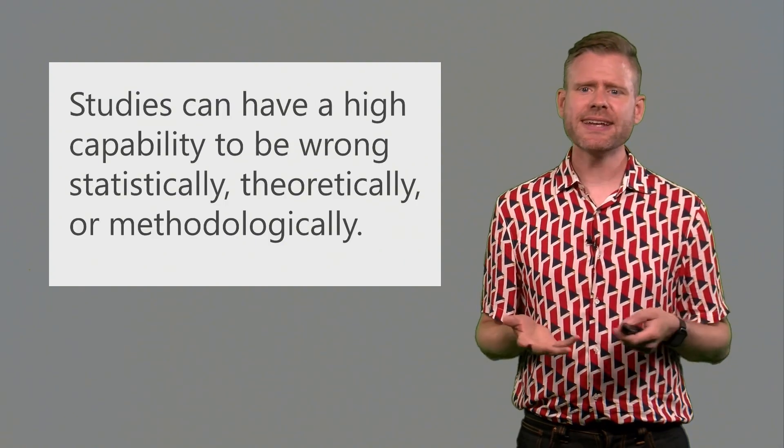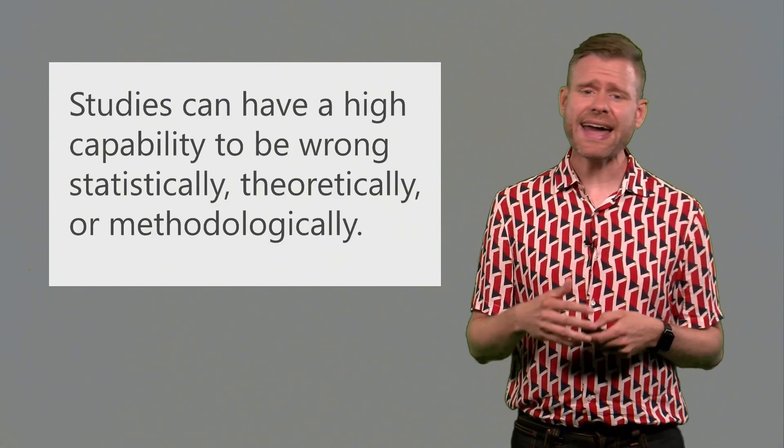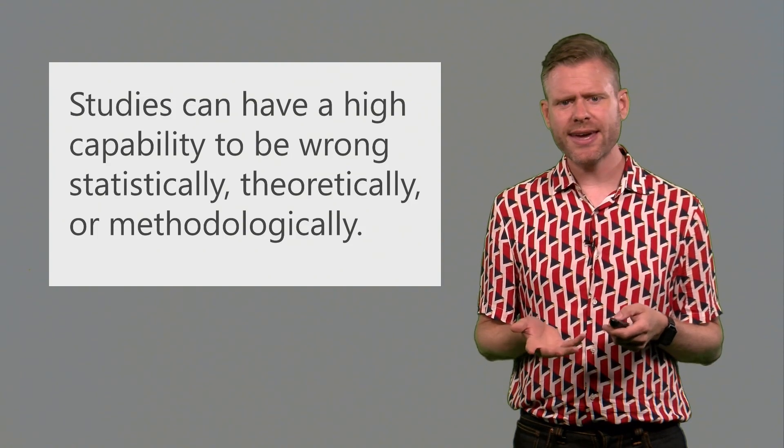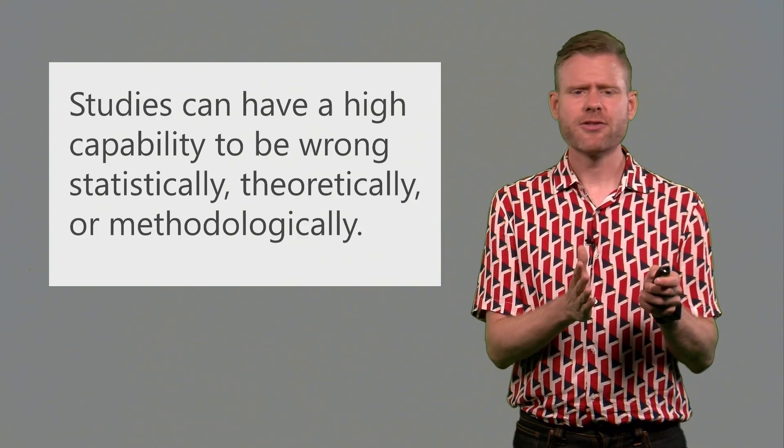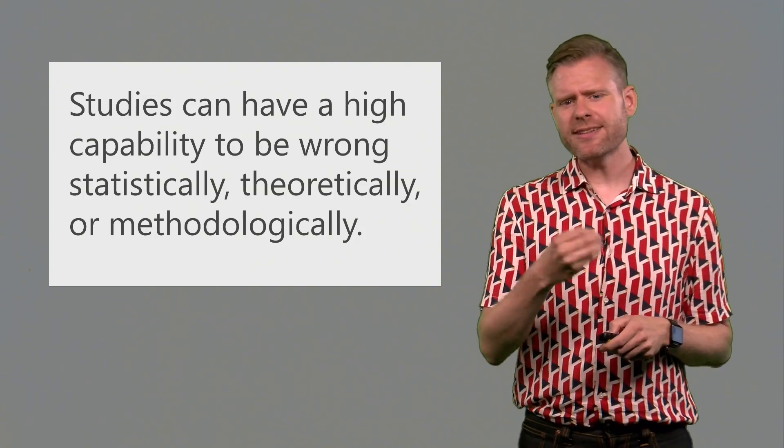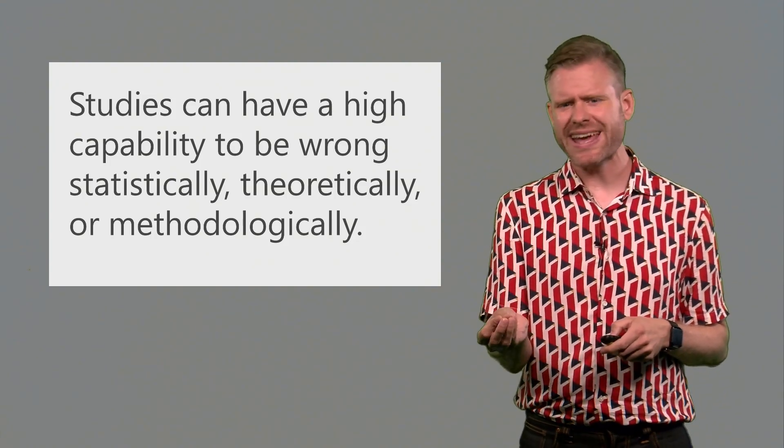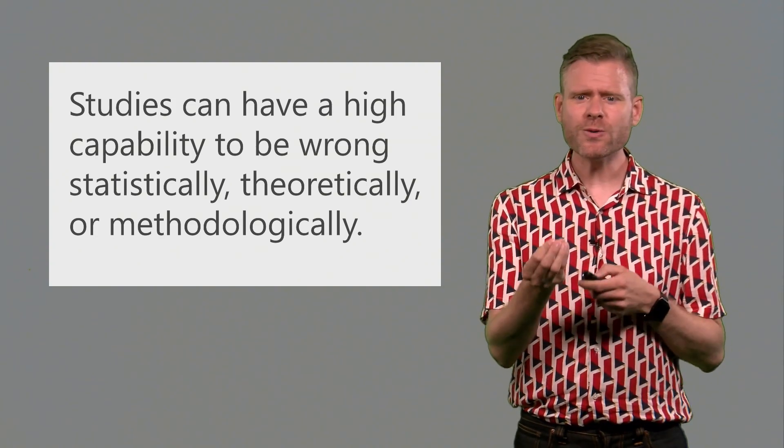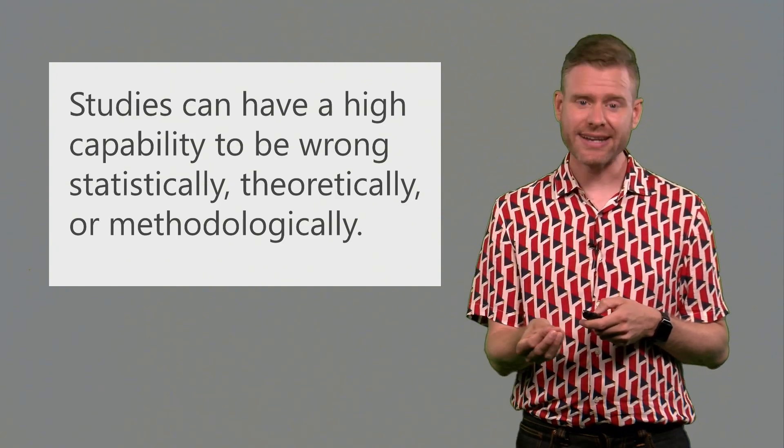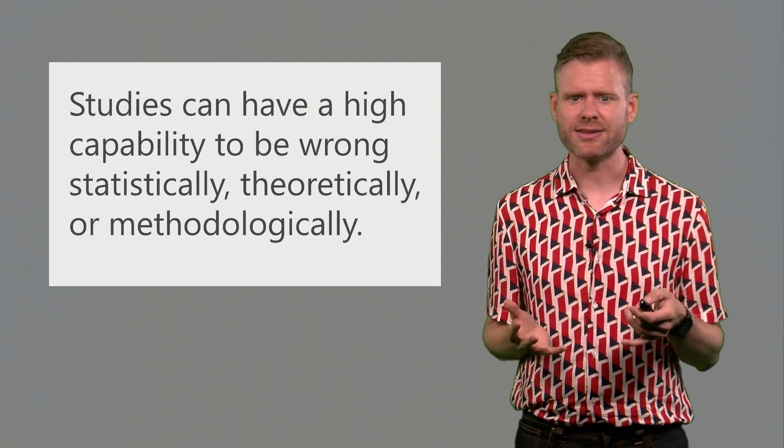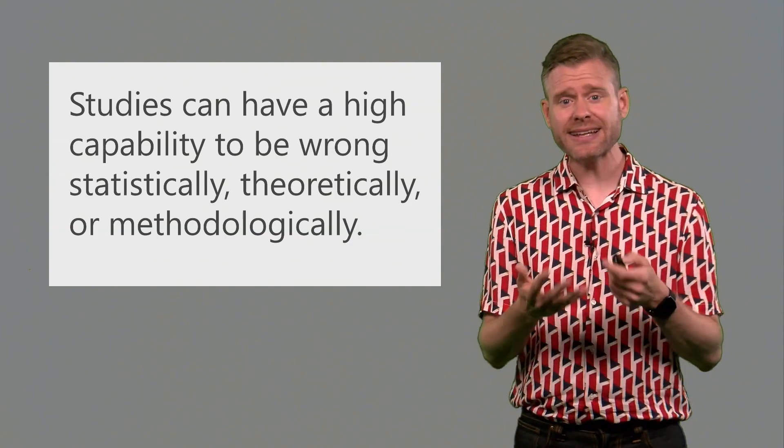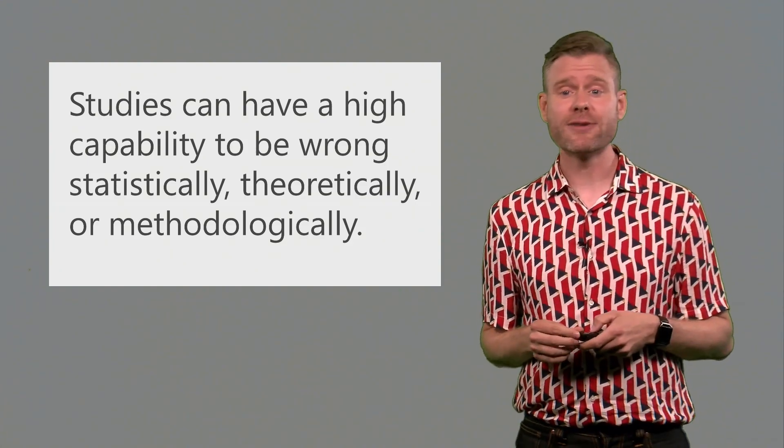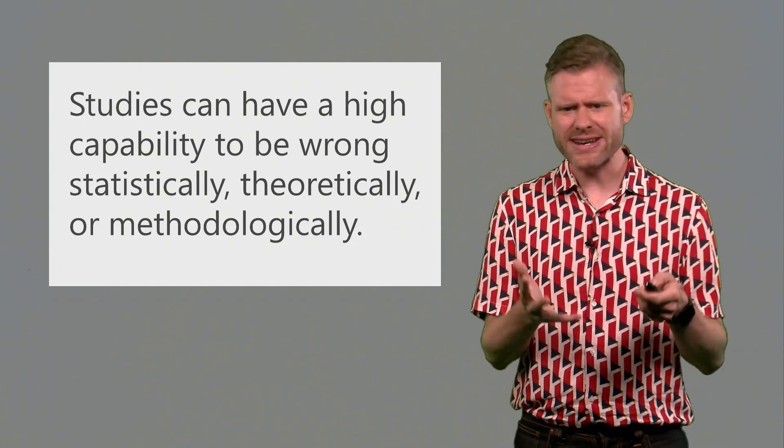Now studies can have a high capability of being wrong, either in a statistical sense, in a theoretical sense, or in a methodological sense. We can test specific predictions that are much more risky. We can create theories that have many more ways in which they can be wrong than right, and we can devise methods that are so strict that they will only allow a specific hypothesis of demonstrating an effect, but control all other ways of doing this. In the remaining of the lecture, I will mainly talk about statistical severe tests, but it is very important to also keep in mind theoretically strict predictions or methodologically rigorous experiments.